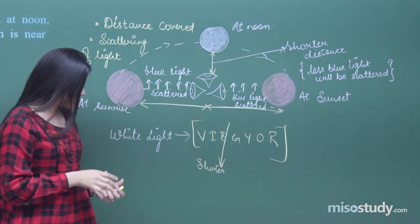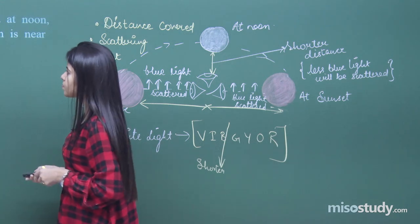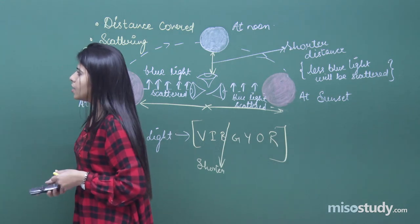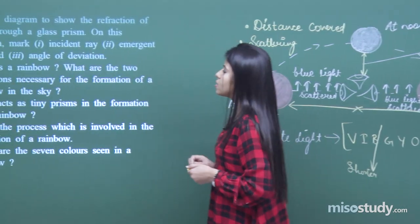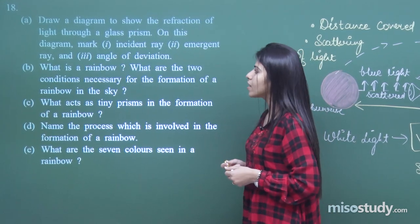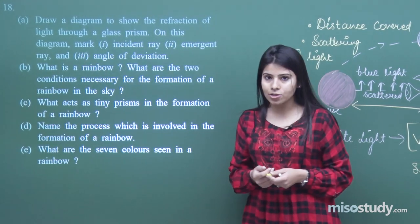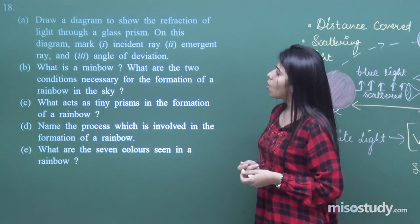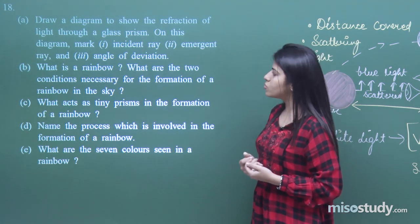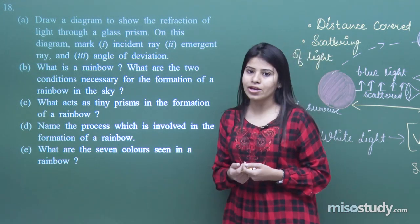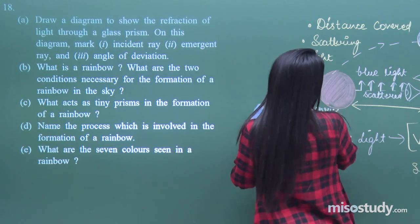Now let's move to the next question. It says: draw a diagram to show the refraction of light through a glass prism. On this diagram mark the incident ray, emergent ray, and angle of deviation. Let's do the first part first.